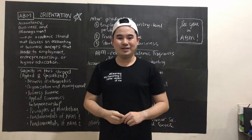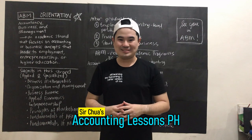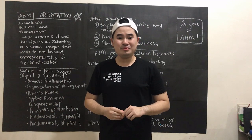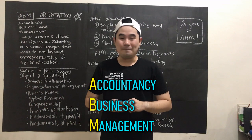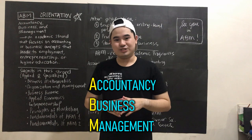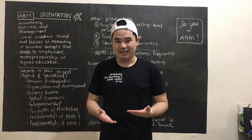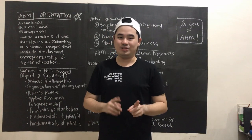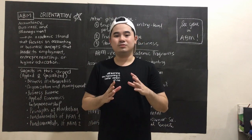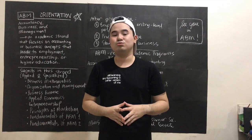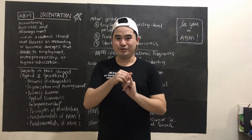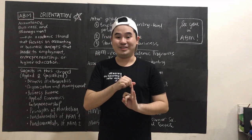Hi everybody, this is Sir Chua and welcome to Sir Chua's Accounting Lessons PH. So today, we will be having an orientation of the ABM strand or the Accountancy, Business and Management strand. Our government has offered grades 11 and 12, and what's different about grade 11 and 12 from basic education before — kinder to grade 10 or 4th year high school — is we now have specializations to prepare you either for work or for entering college.